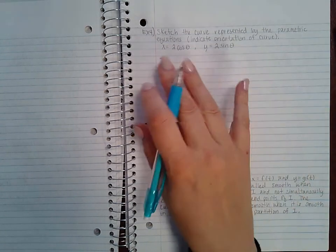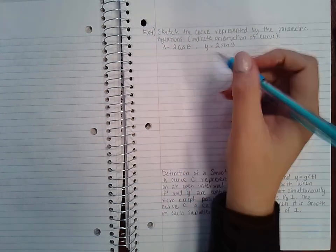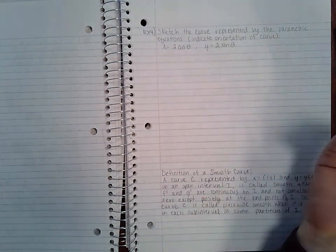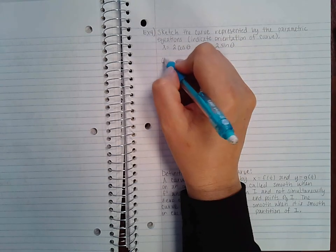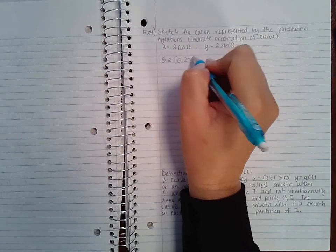Okay, now normally when we're graphing with theta, theta is usually between 0 and π and 2π. So we're gonna assume that theta is between 0 and 2π, and so we're just gonna pick some values here to figure out what's going on.